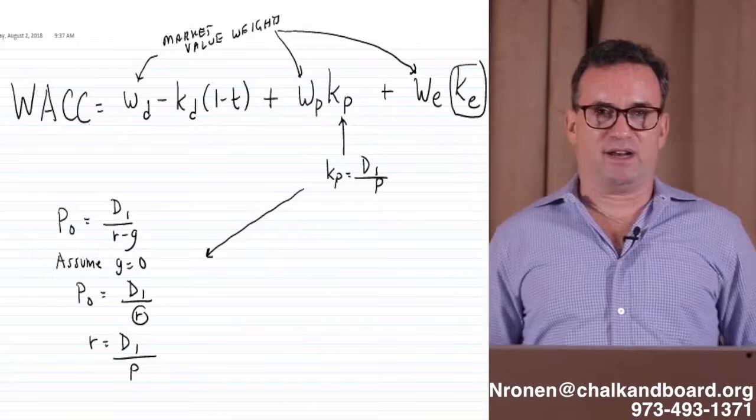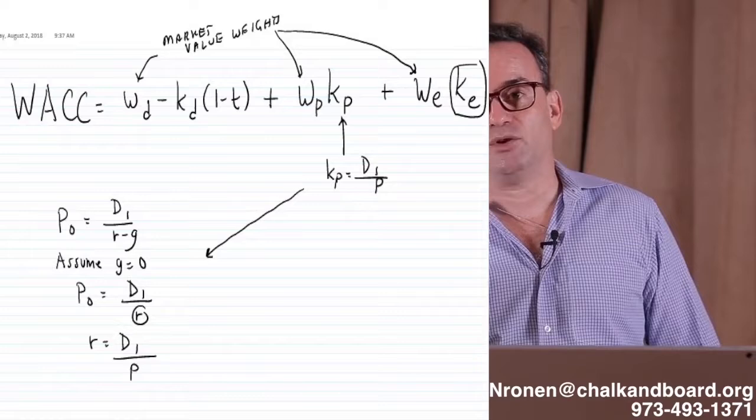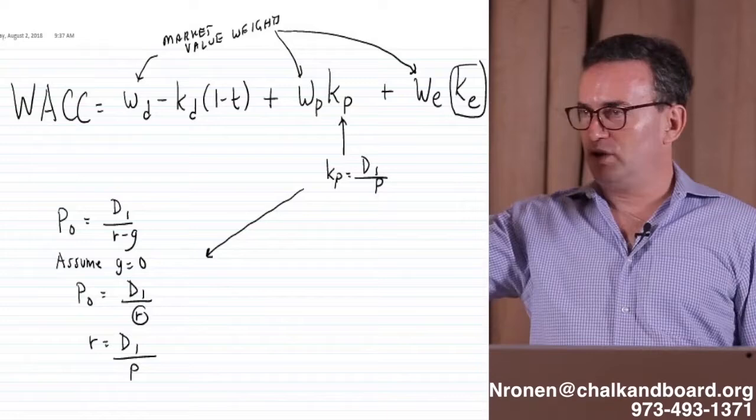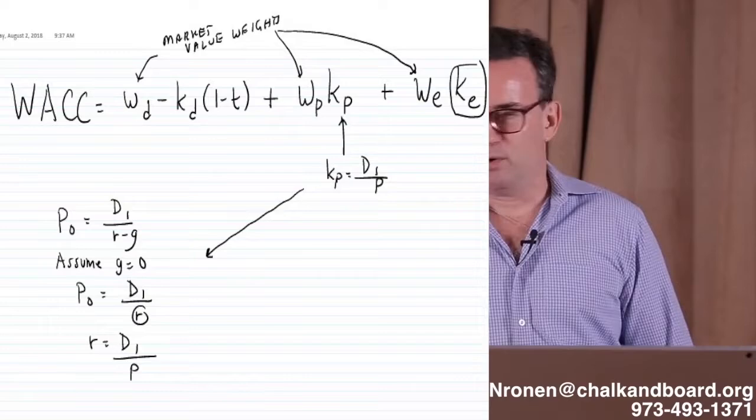For the weights, always use market values, never ever use book values. And sometimes on the exam to trick you, they'll show you the market values of the debt, and then ask you to calculate the weighted average cost of capital, they'll give you the book values. Always use the market values to come up with the weights.